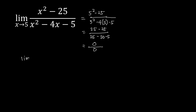We have the limit of x squared minus 25 in the numerator. We can factor that as a difference of two perfect squares: the square root of x squared is x, and the square root of 25 is 5, giving us x minus 5 times x plus 5.